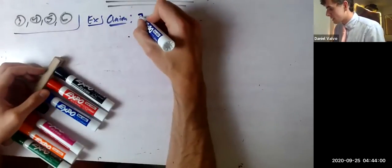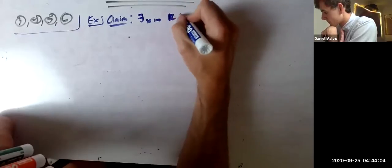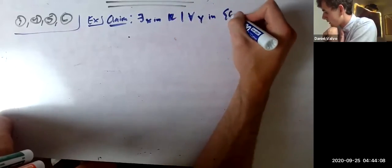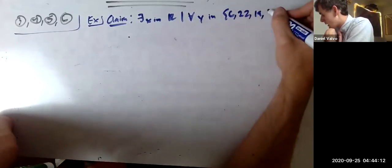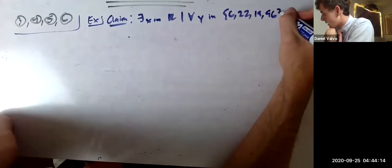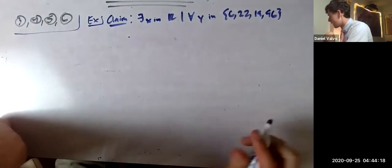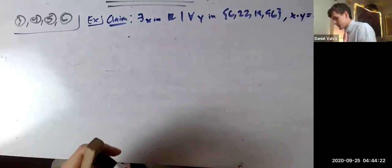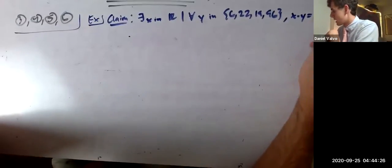There exists an x in the real numbers such that for all y in {6, 22, 19, 96}, x times y equals 0 or x times y equals x.